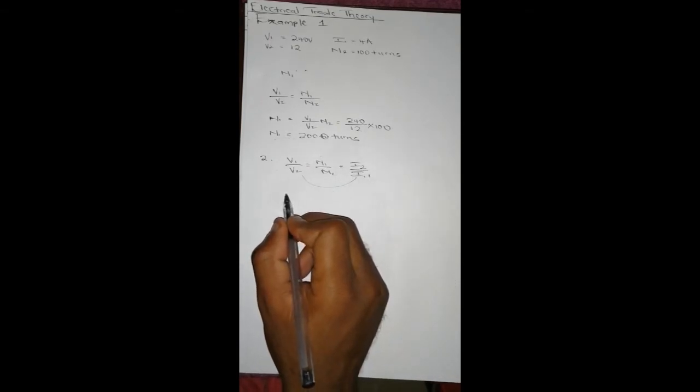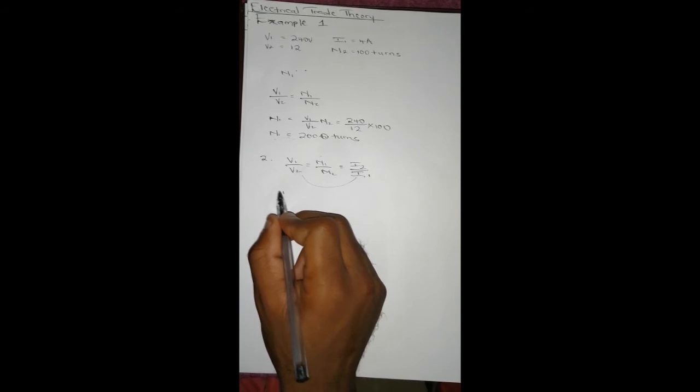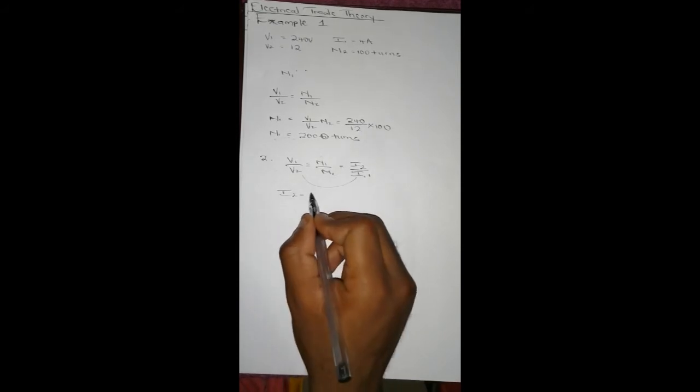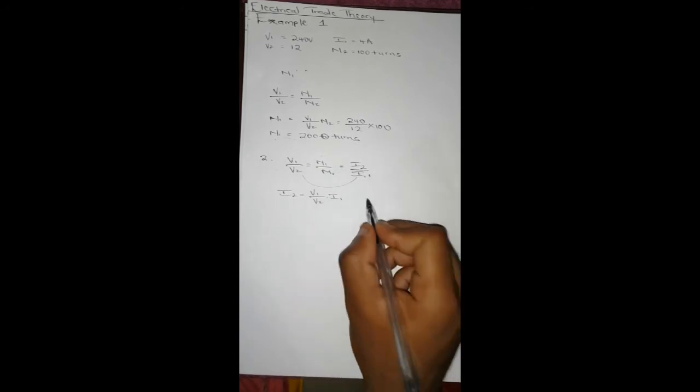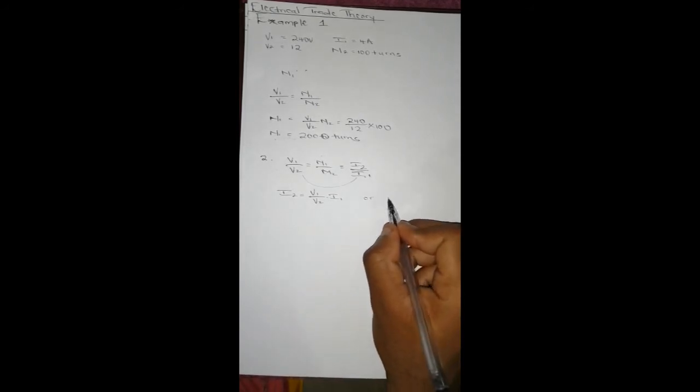Making I2 subject of the formula, we'll end up with I2 = (V1/V2) × I1, or I2 = (N1/N2) × I1.